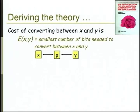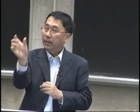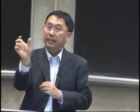Now look at two information-carrying entities x and y — they may be chain letters, genes, genomes, English documents, or pictures. To measure the distance between x and y, I define it as the smallest energy needed to convert between x and y. By von Neumann, that's the smallest number of bits — the smallest number of kTs — needed to convert between x and y.